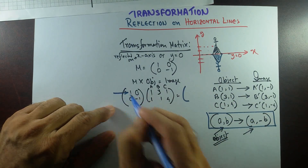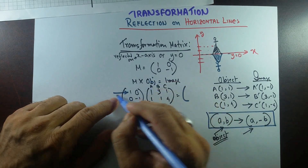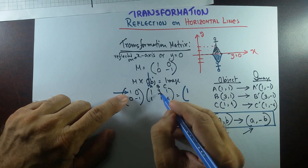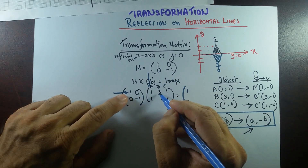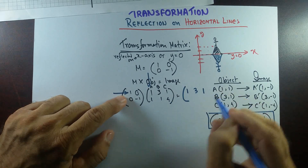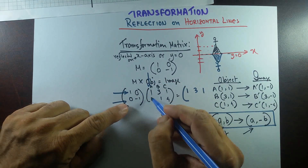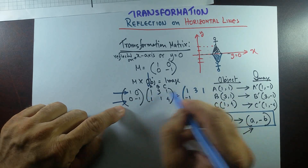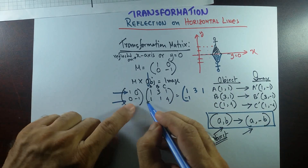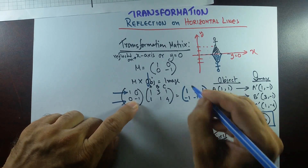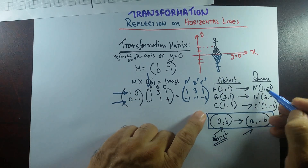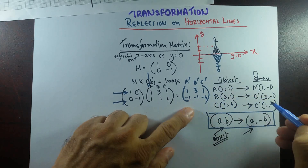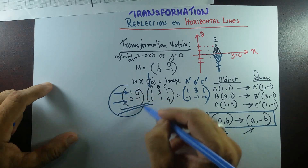Now the image is found by matrix multiplication. First row with first column: 1×1 + 0×1 = 1; 1×3 + 0×1 = 3; and 1×1 + 0×4 = 1. Second row with each column: 0×1 + (−1)×1 = −1; 0×3 + (−1)×1 = −1; 0×1 + (−1)×4 = −4. So A prime is (1, −1), B prime is (3, −1), and C prime is (1, −4).